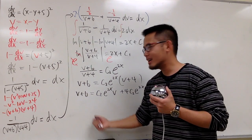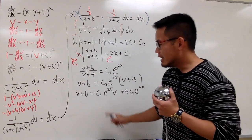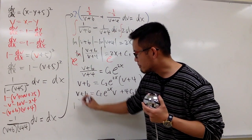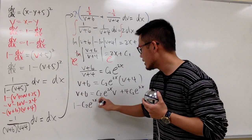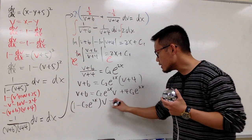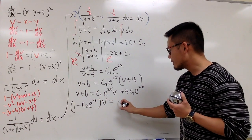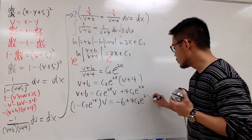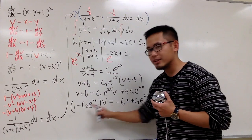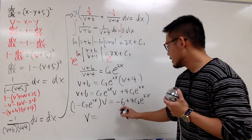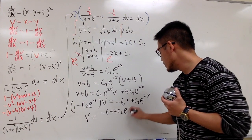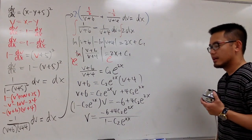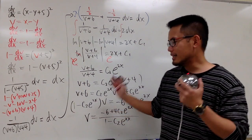Collecting all v terms on one side: v - C₂e^(2x)·v = -6 + 4C₂e^(2x), then factoring: v(1 - C₂e^(2x)) = -6 + 4C₂e^(2x). Dividing both sides, we isolate v: v = (-6 + 4C₂e^(2x)) / (1 - C₂e^(2x)).